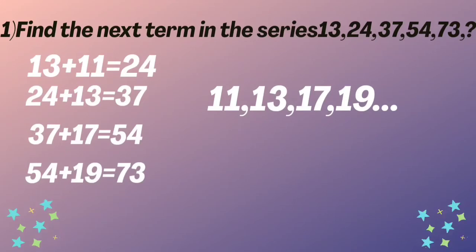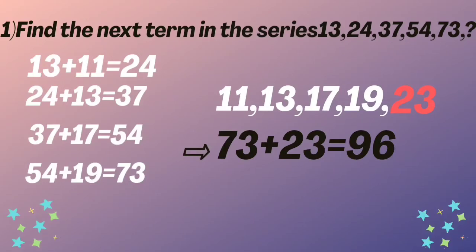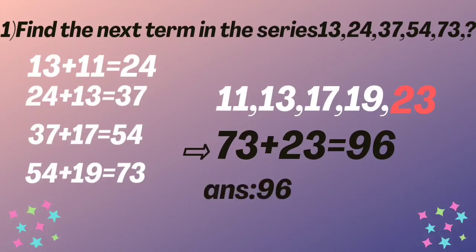What comes after 11, 13, 17, and 19? It is 23. So by adding 23 to 73, we get the answer. Therefore, the answer is 73 plus 23 equal to 96.